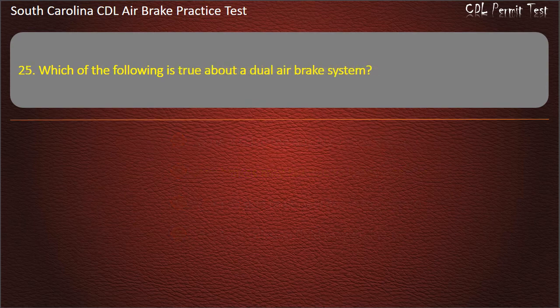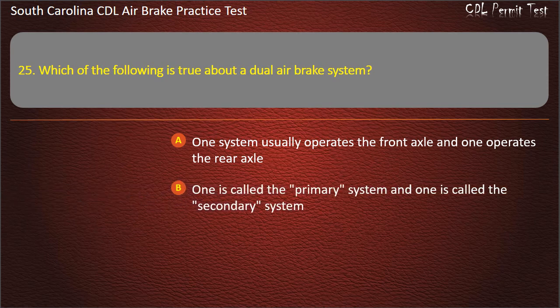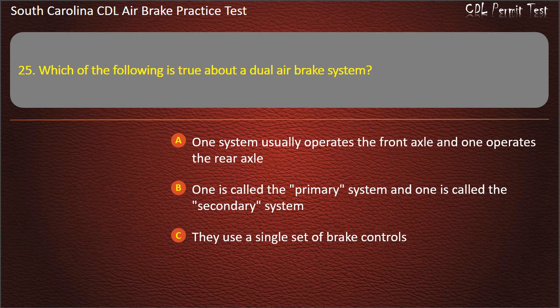Question 25: Which of the following is true about a dual air brake system? One system usually operates the front axle and one operates the rear axle; one is called the primary system and one is called the secondary system; they use a single set of brake controls; or all of the above. Answer: All of the above.